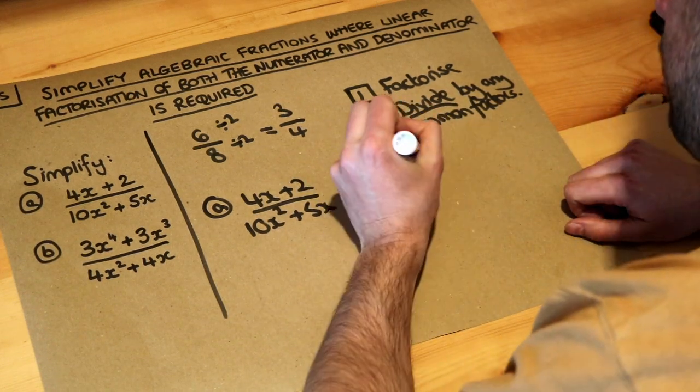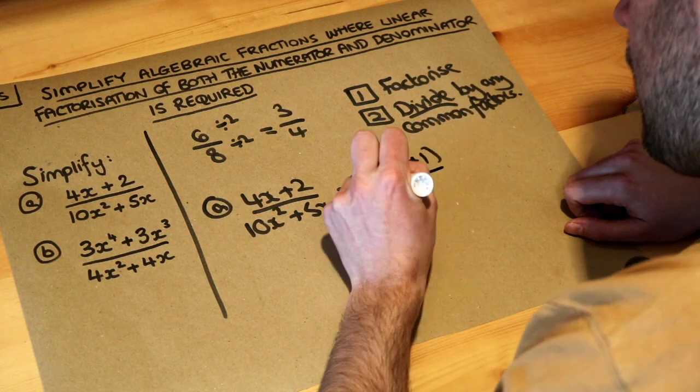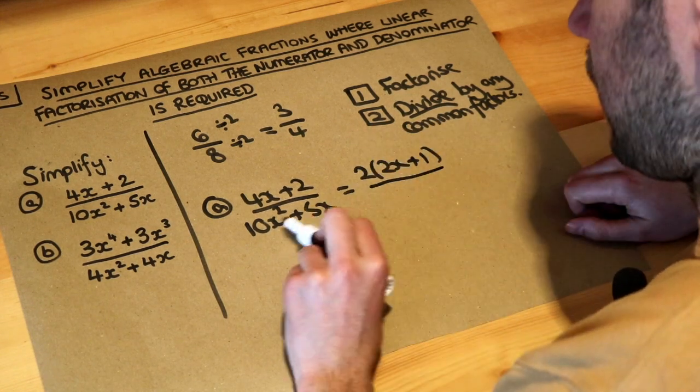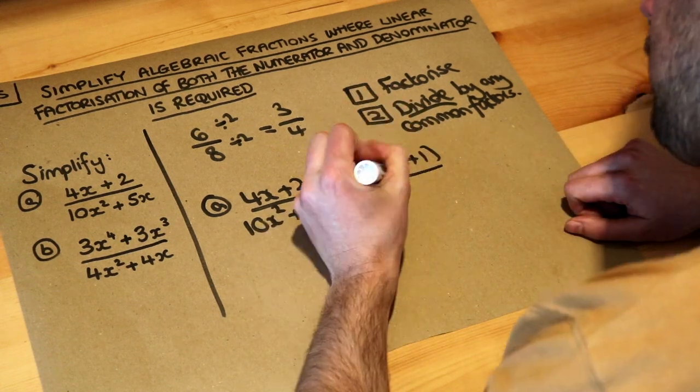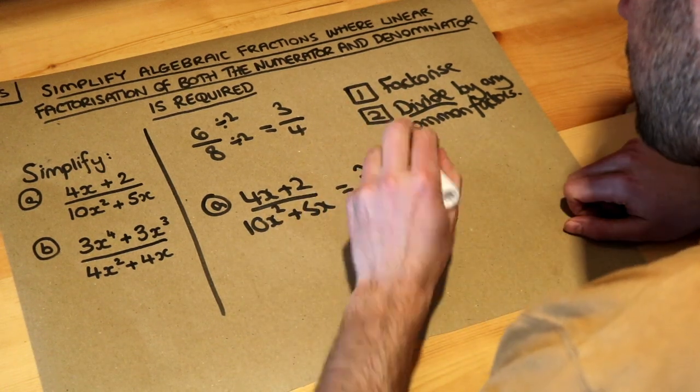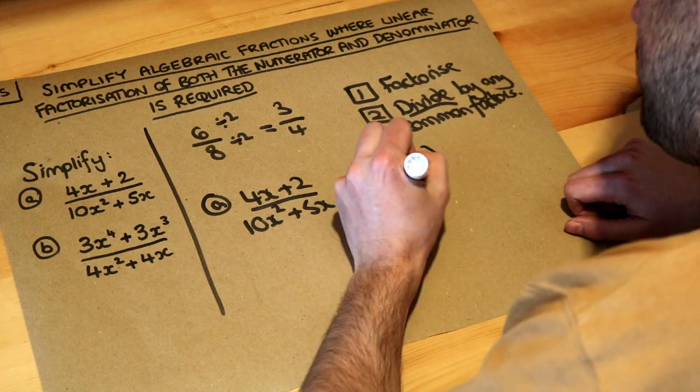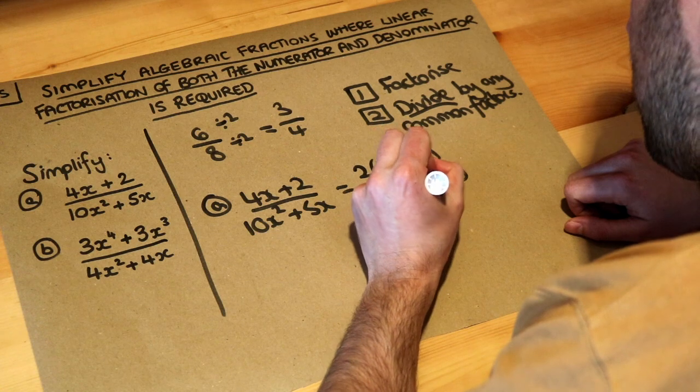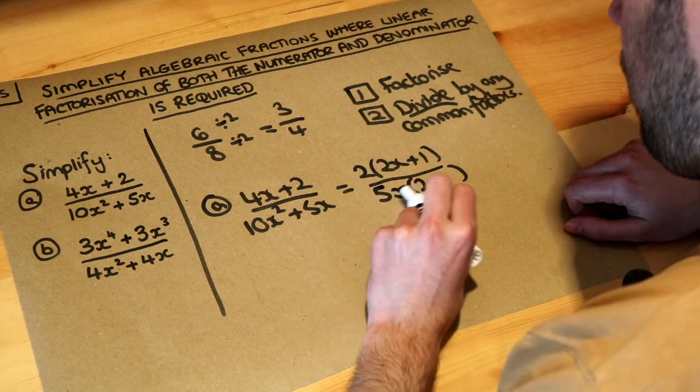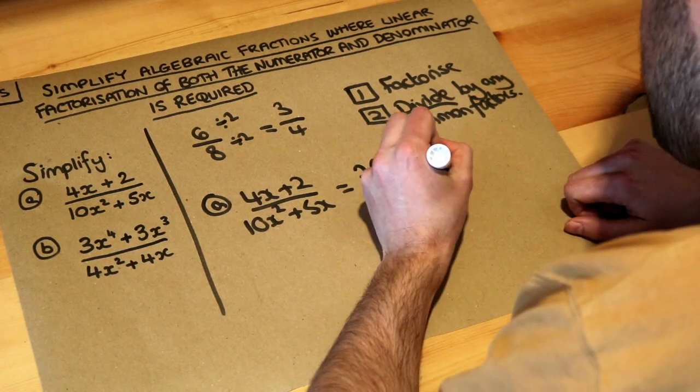And then if we factorize the denominator, 10x² and 5x have what in common? Well 10 and 5 have a factor of 5 in common, and then x² and x have x in common. And then we think, 5x times what is 10x²? Well it's 2x. And then 5x times what is 5x? It's 1.